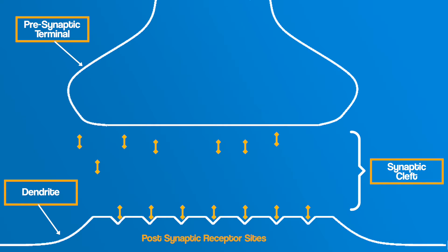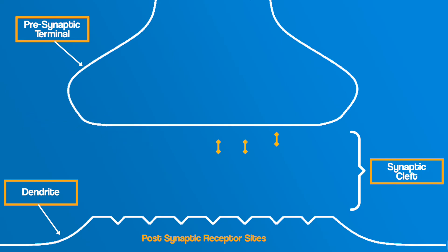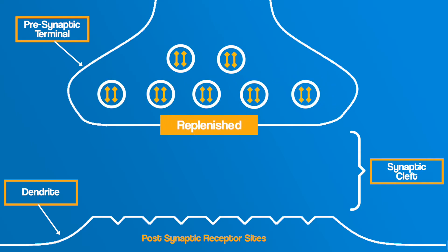Post meaning after, so post-synaptic equals after the synapse. The neurotransmitter is then converted back into an electrical impulse and carries on down the axon of the next neuron. Enzymes are released to break down any neurotransmitters still in the synapse. Also, some neurotransmitters go through a process called reuptake, where any excess neurotransmitters still present are absorbed back to the pre-synaptic terminal. Vesicles are then replenished with new and reused neurotransmitters ready for the next impulse.